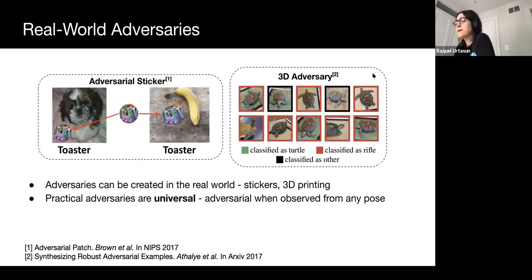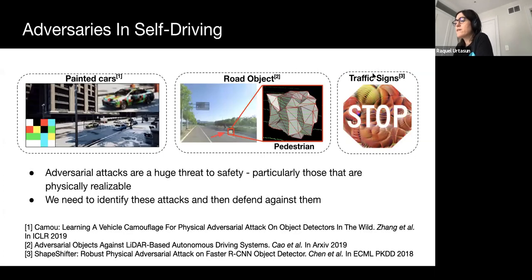In particular, practical real-world adversaries can be synthesized in the form of stickers or 3D objects. These adversaries are universal and input-agnostic, meaning they are adversarial across different environments, lighting, pose, etc. Such attacks are highly relevant in practice as they do not require prior knowledge of the input. In the context of self-driving, universal and physically realizable adversaries are particularly concerning. Physically realizable adversaries can be placed on the road, while universal adversaries are robust to the motion of dynamic objects, consistently fooling self-driving perception across time to damage downstream tasks.